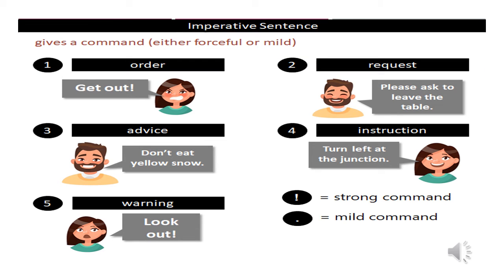A sentence that expresses a command, a request, or an advice is called an imperative sentence. For example: number one, order — Get out. Number two, request — Please ask to leave the table. Number three, advice — Don't eat yellow snow.